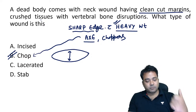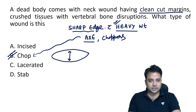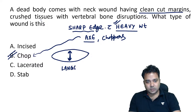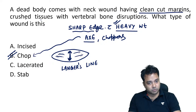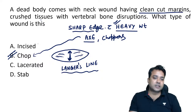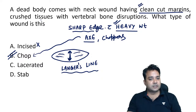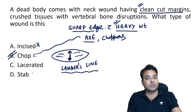Such wounds are called chop wounds. The gaping of a wound is determined by Langer's lines on the skin surface — if the wound is perpendicular to Langer's lines, there will be large gaping between the two edges. Other options are ruled out: incised wound is by a light sharp weapon; laceration is ruled out based on the margins; stabbing is ruled out as depth being more than length is not indicated. By ruling out options, you can solve the question.